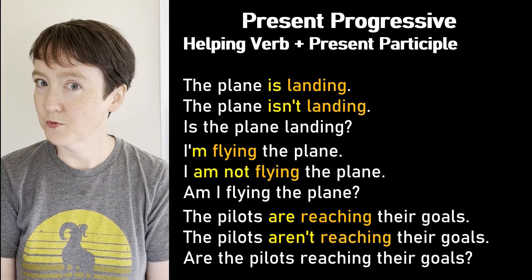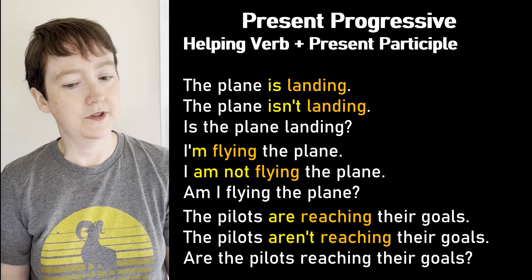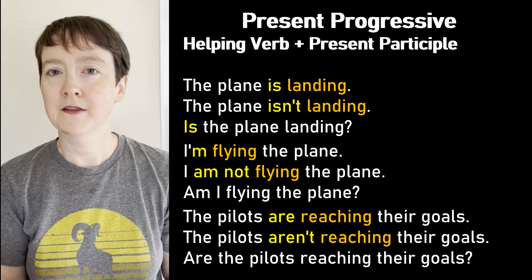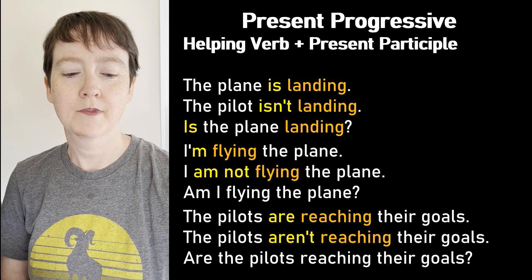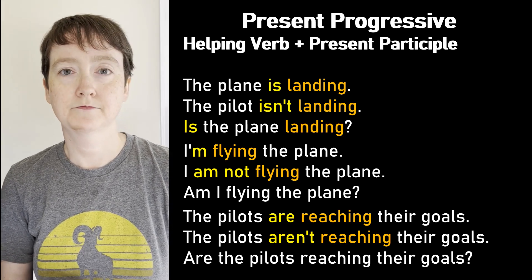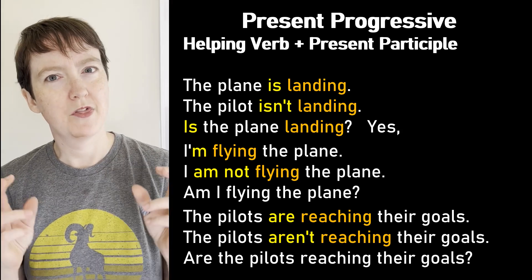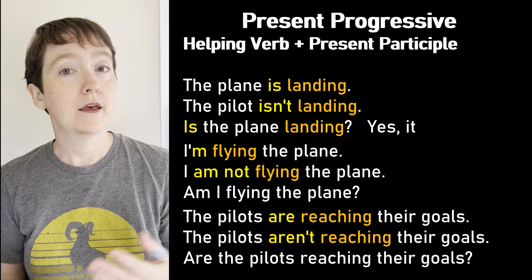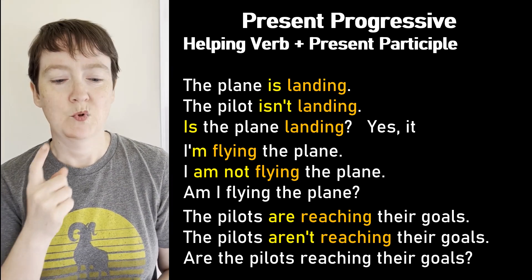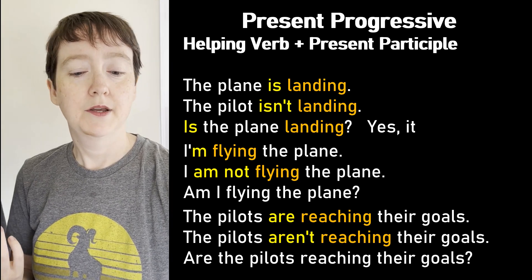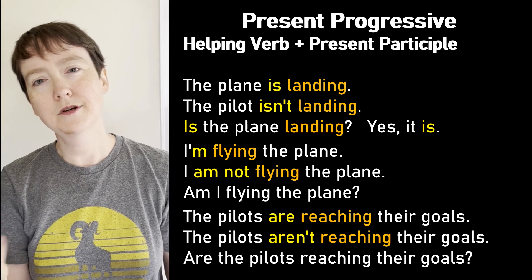Now look at the question word order. For a yes/no question such as 'Is the plane landing?' — we start with the helping verb 'is,' then the subject 'the plane,' and then the present participle 'landing.' For a short answer, say yes or no, then the subject pronoun. What is the subject pronoun for 'the plane'? It. And then which verb — the helping verb or the present participle main verb? The helping verb, because it is the first verb in the question. 'Is the plane landing?' — 'Yes, it is.' Or 'No, it isn't.'